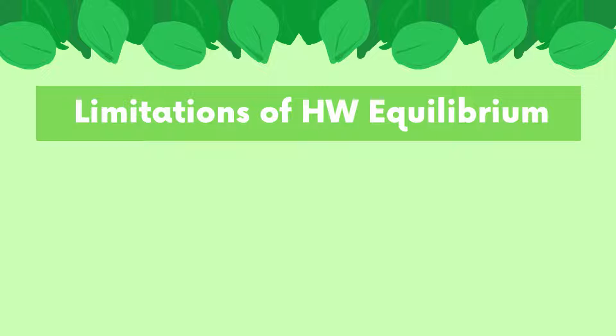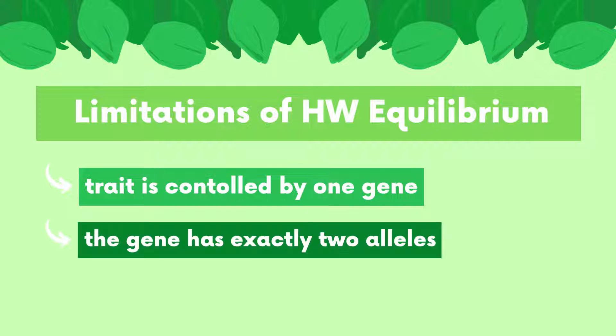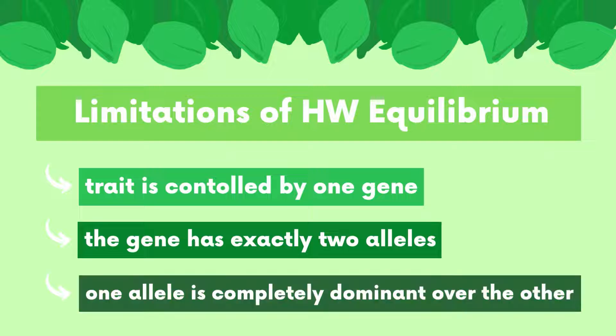Hardy-Weinberg Equilibrium can only be applied if we're dealing with a genetic trait that's controlled by just one gene, and that gene also has to have exactly two alleles controlling it. One of those alleles has to be completely dominant over the other recessive allele.